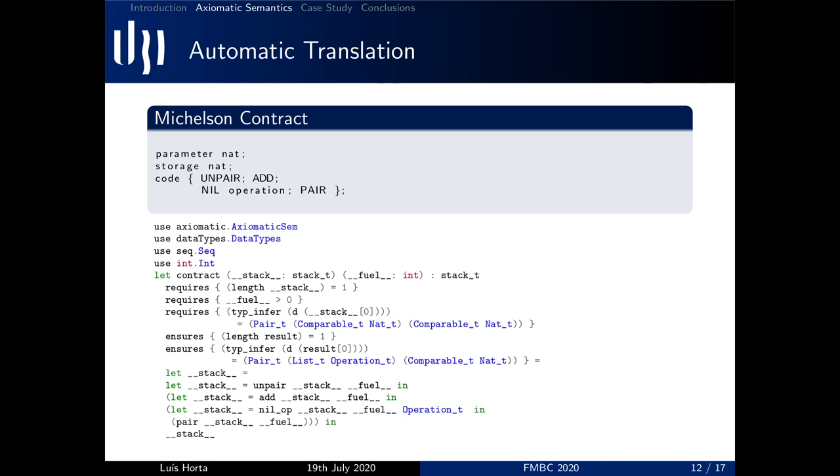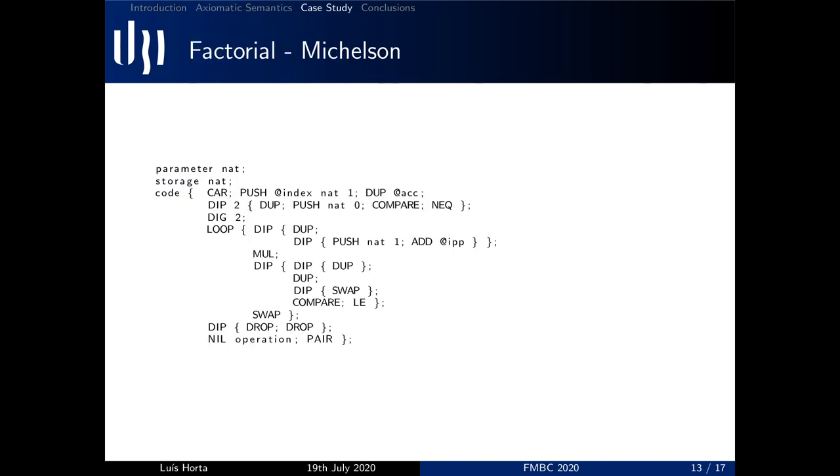But let's move on to a more concrete case study, namely the factorial contract. This contract receives as a parameter the number whose factorial is going to be calculated and stores the result in storage. It starts by dropping the previous storage and pushes an initial accumulator and the iterator at the value 1. Then it compares the parameter value with 0 and if it's different, it enters the loop to calculate the factorial.